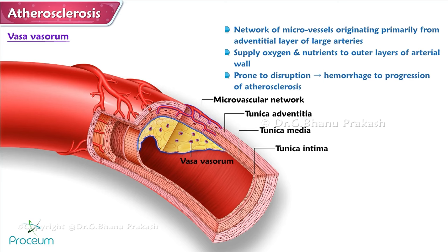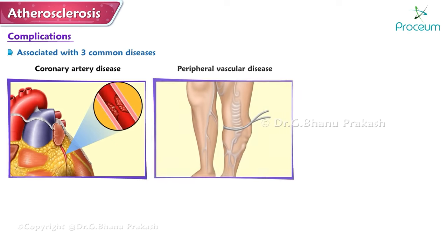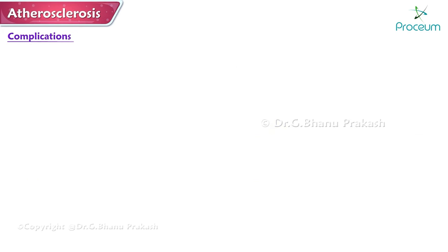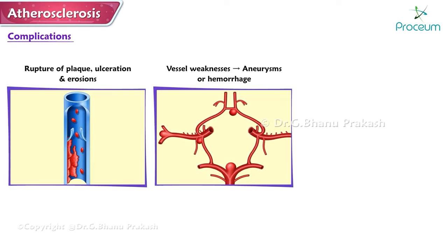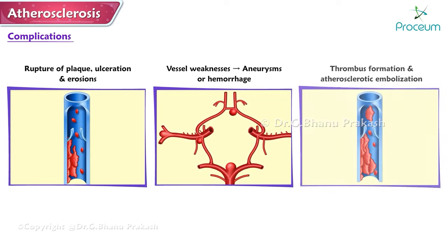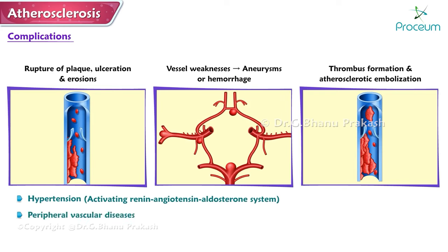Complications of atherosclerosis: three common associated diseases are coronary artery disease, peripheral vascular disease, and stroke. Complications include rupture of plaque, ulceration and erosions, vessel weakening forming aneurysms or causing hemorrhage, thrombus formation, atherosclerotic embolization, and hypertension via activation of the renin-angiotensin-aldosterone system pathway.